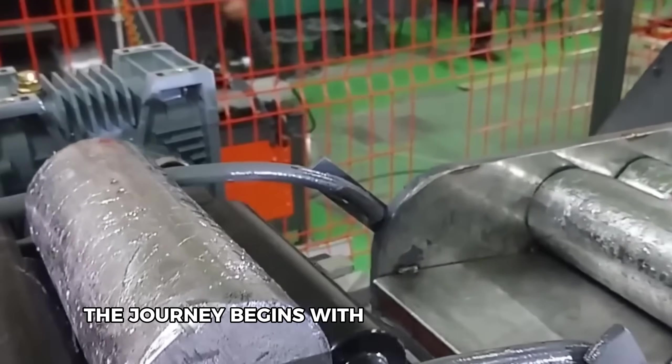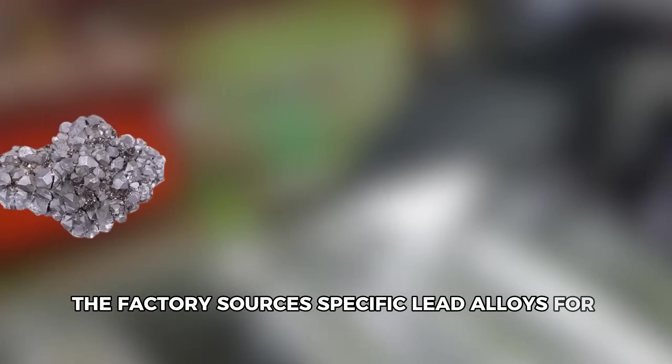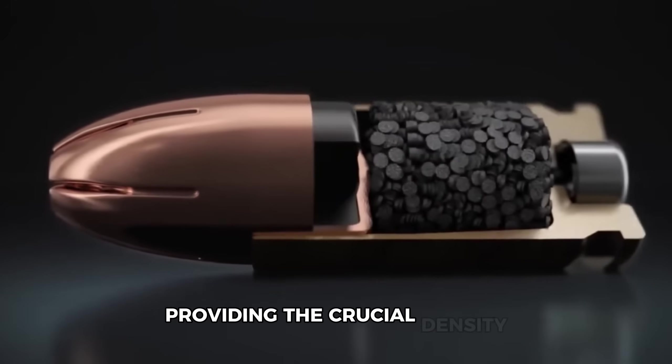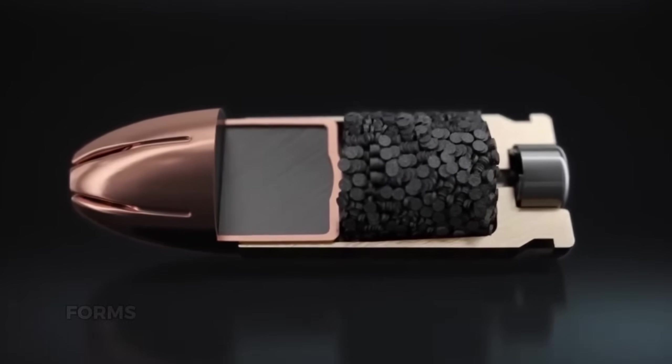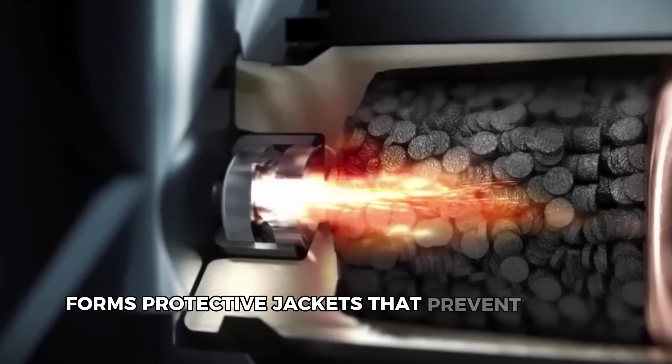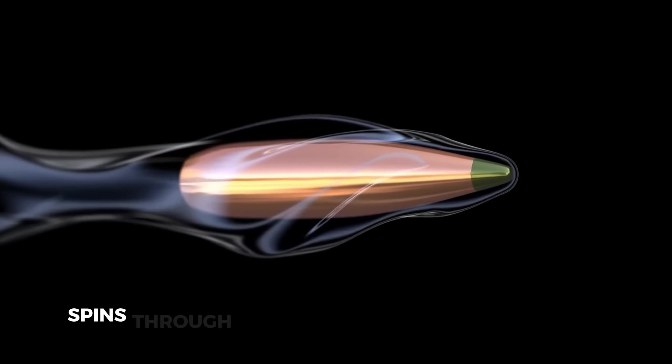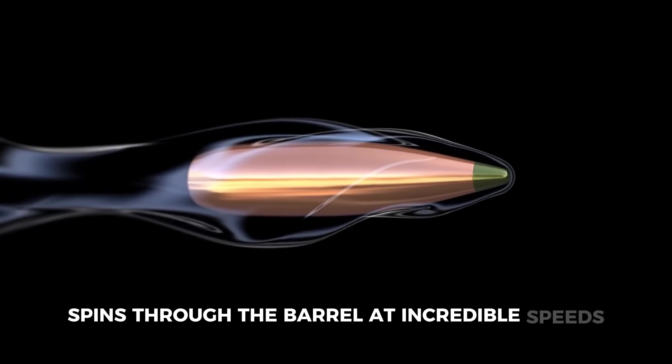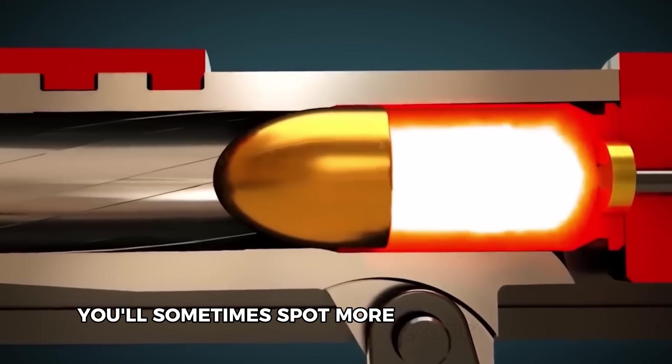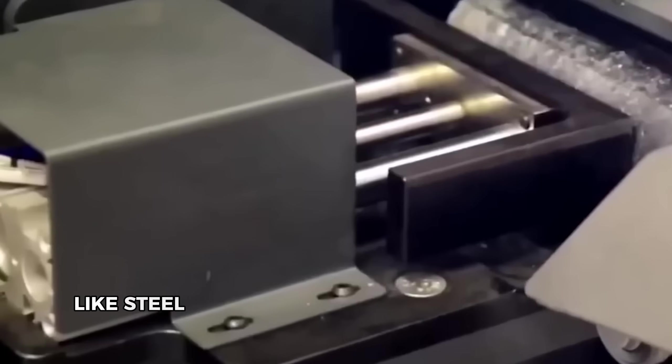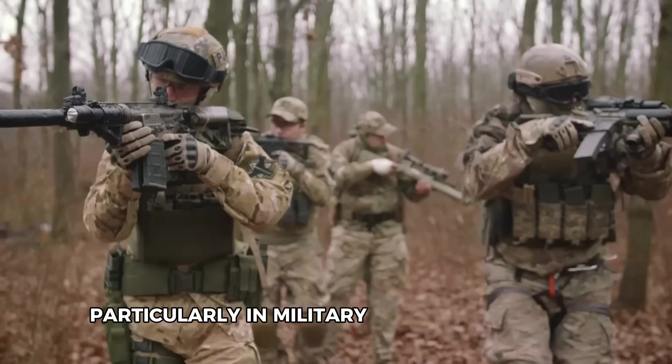The journey begins with material selection. The factory sources specific lead alloys for cores, providing the crucial density that helps bullets maintain their trajectory. Surrounding this core, copper forms protective jackets that prevent barrel fouling and enhance durability as the bullet spins through the barrel at incredible speeds. For specialized applications, you'll sometimes spot more exotic materials like steel or tungsten when extra hardness is needed, particularly in military-grade ammunition.